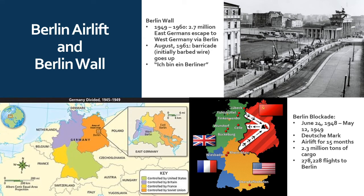About two-thirds of that cargo by weight was coal, since they still relied heavily on coal for industry and heating homes. Of the remaining roughly one-third, most was food — milk, rice, a wide variety of food supplies — and medicine. Over the course of those 15 months we're talking about almost 300,000 flights into the city of Berlin. Eventually the Soviet Union lifted the blockade and transportation was reopened between West Germany and West Berlin.